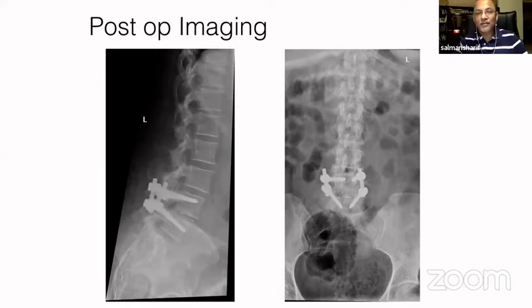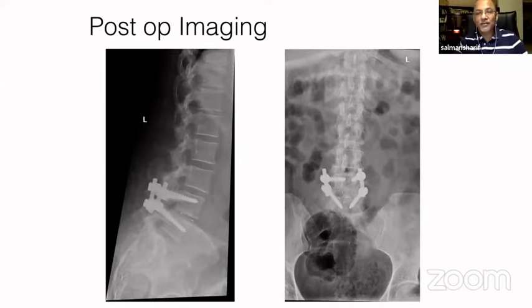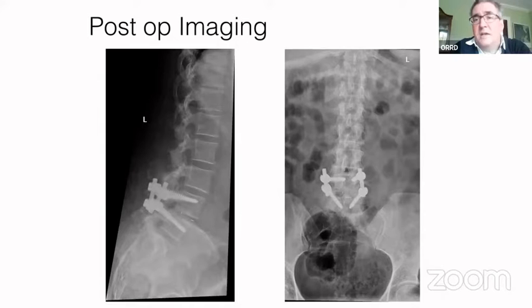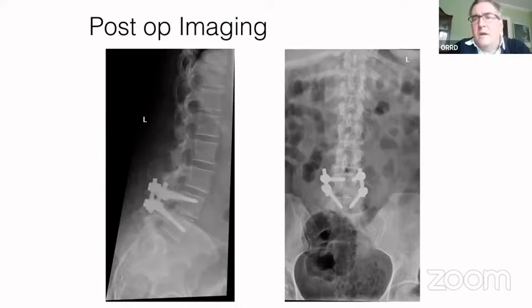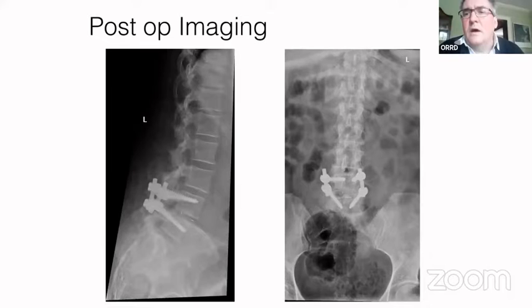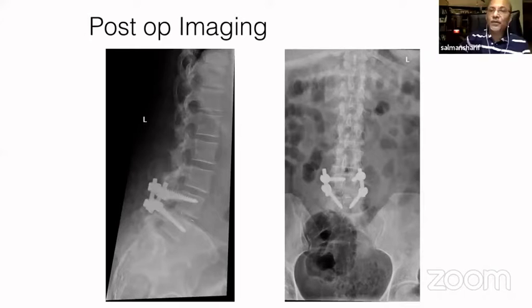Mehmet confirmed he would do the same surgery: interbody fusion plus short fixation. Doug added another option: for patients with dynamic instability and dominant foraminal or lateral recess stenosis rather than central stenosis, an ALIF with percutaneous screws is an excellent option for indirect decompression. However, with severe central stenosis or cauda equina, he tends to do a TLIF. He would consider anterior interbody fusion with percutaneous screws if the dominant stenosis is foraminal and lateral recess.